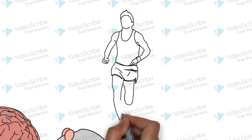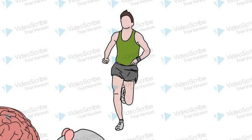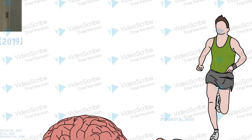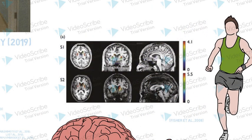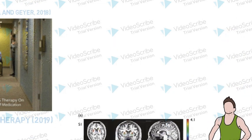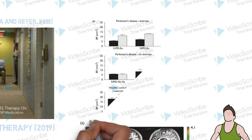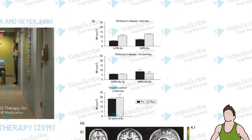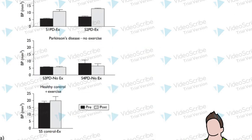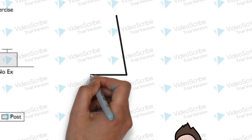Fisher et al. found that high-intensity treadmill training, with appropriate support from a harness, improved gait strategy and performance in Parkinson's patients when compared to standard physiotherapy and no training. More interestingly, they found that cortical excitability improved compared to baseline and control groups. However, it must be noted that no statistical tests were performed, so this indicates a trend rather than any real difference. There was also only a small sample size and large variability in both severity of disease and dosage of drugs participants were taking.